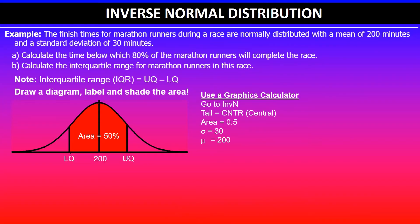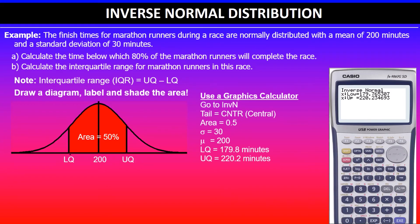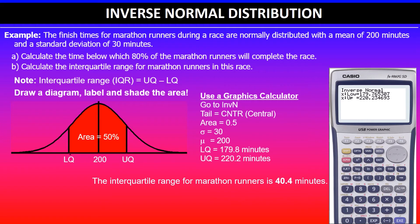The graphics calculator gives you both the lower quartile and upper quartile values. The lower quartile is 179.8 minutes and the upper quartile is 220.2 minutes. Writing the answer in context: the interquartile range for marathon runners is 40.4 minutes — that is, 220.2 minus 179.8 equals 40.4. And that's the interquartile range for this problem.